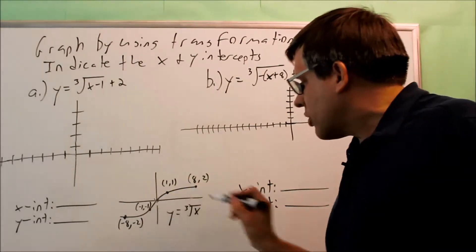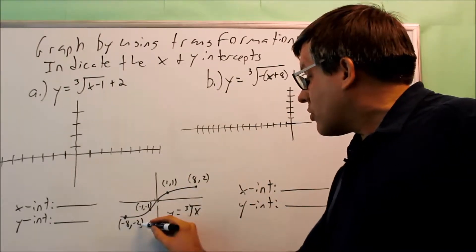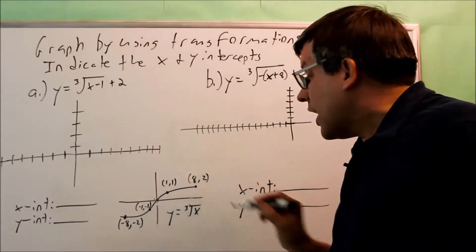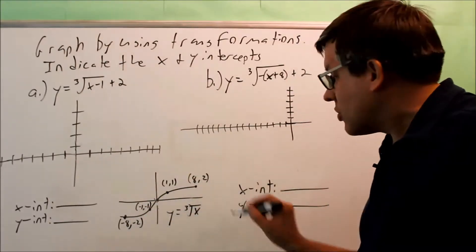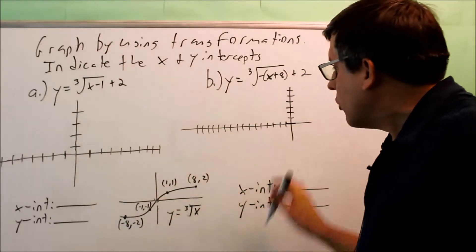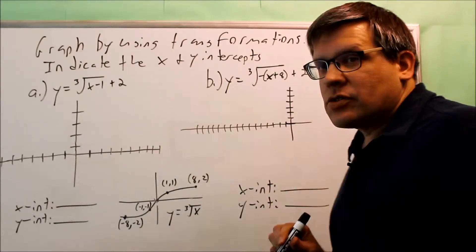The base graph goes through zero zero, negative eight negative two, negative one negative one, one one, and eight two. So this is the graph that we're going to be working with for both of these.